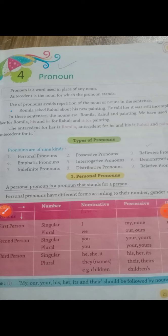Toh clear ho gaya? Antecedent matlab prior — uske pehle ka. Toh Romila ke liye 'her' jo pronoun hai, uske liye antecedent kaun hua? Romila. Theek hai. 'He' ke liye antecedent kaun hua? Rahul. Aur 'it' ke liye antecedent kaun hua? Painting.